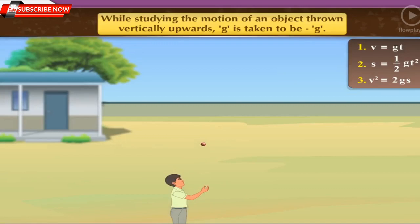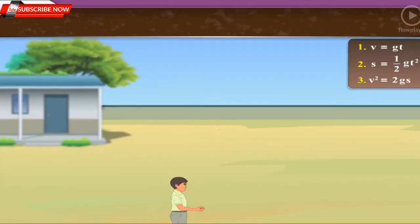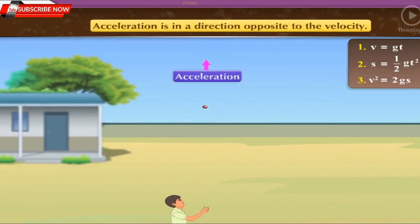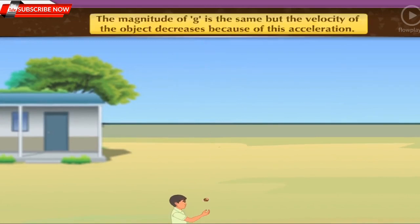While studying the motion of an object thrown vertically upwards, g is taken to be -g. It is because in this case, acceleration is in a direction opposite to the velocity. The magnitude of g is the same, but the velocity of the object decreases because of this acceleration.